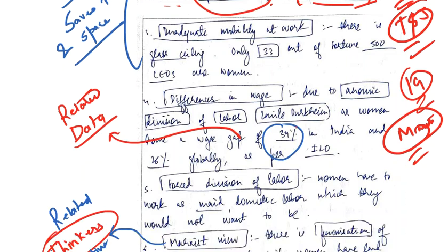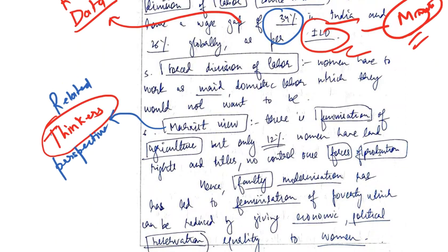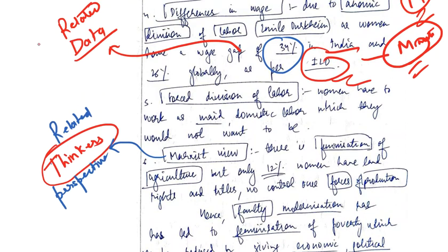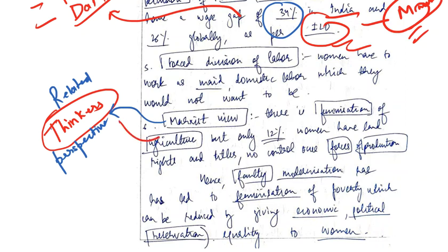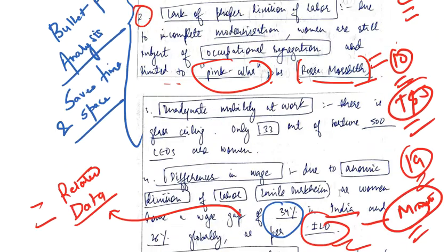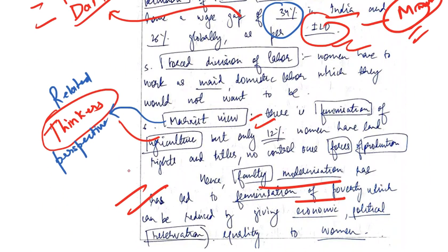The different points are mentioned, related data is also cited, and the source is mentioned. Whenever you quote data, do mention the source — this is a very good practice. Towards the end, the Marxist view is also mentioned among related thinkers. The answer concludes with a reference to feminization and equality in the context of modernization.